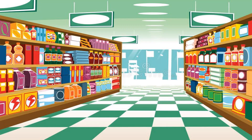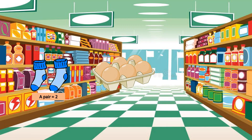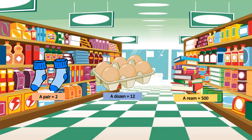As we buy socks in pairs, eggs in dozens, and papers in a ream, eggs are counted using the unit dozen. One dozen means 12 of something.